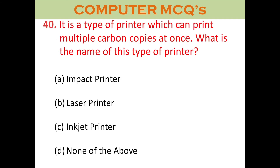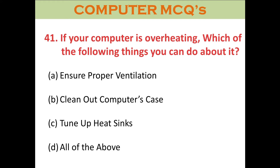Question forty: It is the type of printer which can print multiple carbon copies at once. What is the name of this type of printer? A. Impact printer. B. Laser printer. C. Inkjet printer. D. None of the above. The answer is A: Impact printer.